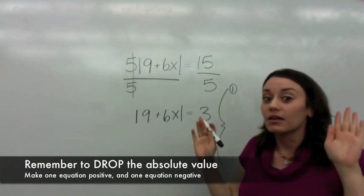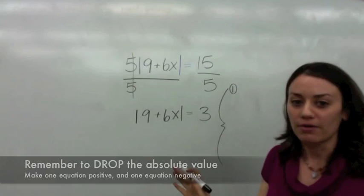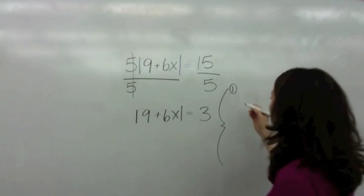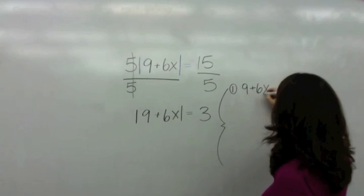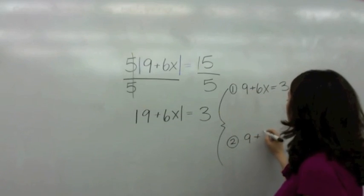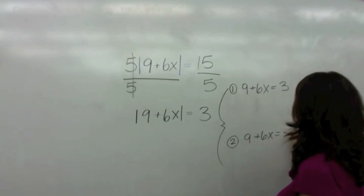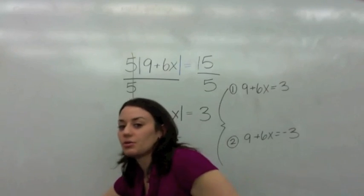Here's a part that I think you guys are missing. You need to drop the absolute value. What did I say? I said, drop the absolute value. Okay, goes away for now. So we have nine plus six X equals three. And what's the second equation? We all know it's nine plus six X equals negative three. Okay, great. So now we're going to solve for these two equations.